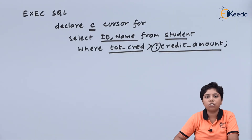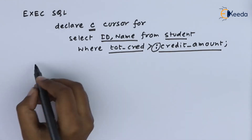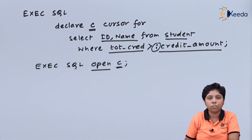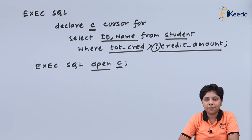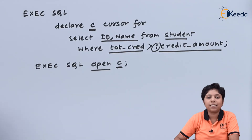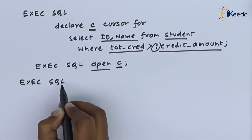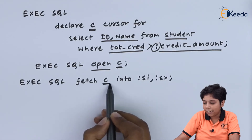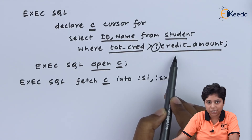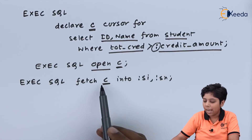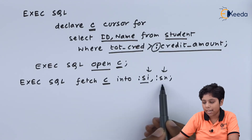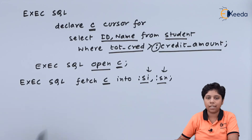Now we will open the cursor to use it in the language. Using the cursor name C we can actually open the cursor to use it. The values that we have selected using cursor C can be fetched into host language variables by the fetch command. Here I am fetching the ID and name from the student relation based on the predicate that total_credit is greater than credit_amount, into two host language variables: SI for storing ID and SN for storing name.